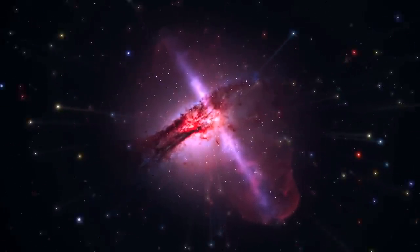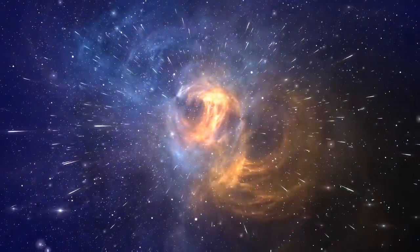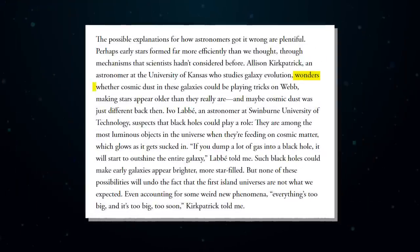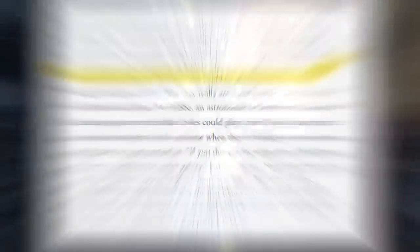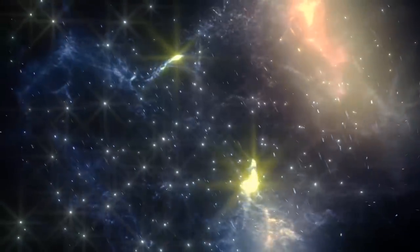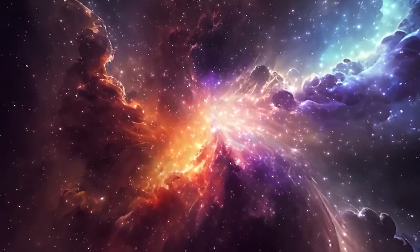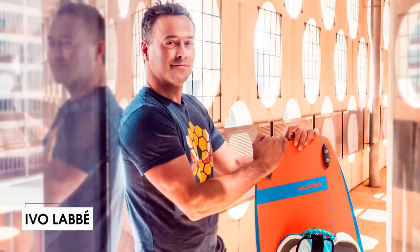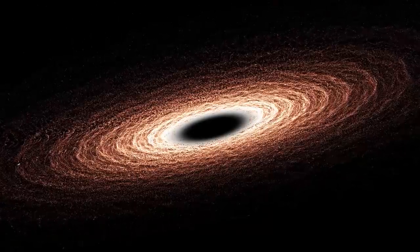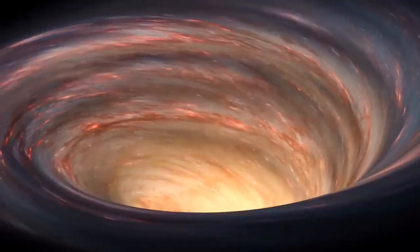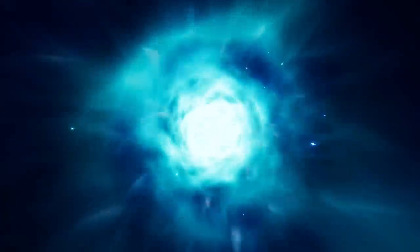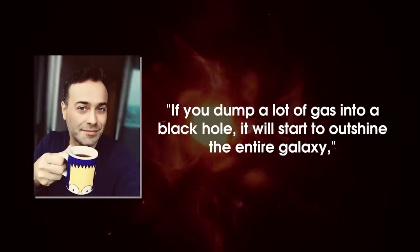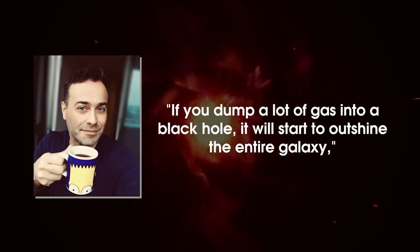Perhaps early stars formed far more efficiently than we thought, through mechanisms that scientists hadn't considered before. Alison Kirkpatrick, an astronomer at the University of Kansas who studies galaxy evolution, wonders whether cosmic dust in these galaxies could be playing tricks on Webb, making stars appear older than they really are, and maybe cosmic dust was just different back then. Ivo Labe, an astronomer at Swinburne University of Technology, suspects that black holes could play a role. They are among the most luminous objects in the universe when they're feeding on cosmic matter, which glows as it gets sucked in. If you dump a lot of gas into a black hole, it will start to outshine the entire galaxy, Labe said.